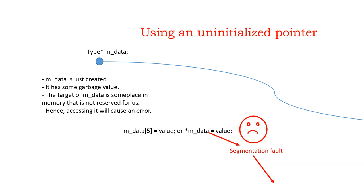Rule number one: when you create a pointer for dynamic memory allocation, do not use it until you actually do the dynamic memory allocation. If you just use the pointer thinking it will work automatically, it won't — because that pointer has some garbage value in it. And that garbage value is an address. What is an address in a computer? A location of a byte in memory.